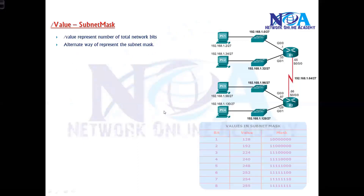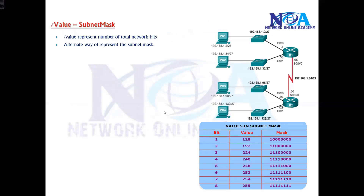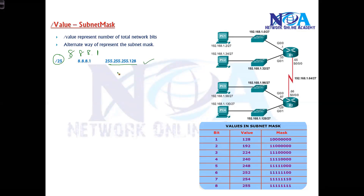Here are some examples using a reference table. You should remember values like 128, 192, 224, 240 for 4 bits, because 128+64+32+16 = 240. For slash 25: 8+8+8 = 24, plus 1 = 25, so the subnet mask is 255.255.255.128. For slash 28: 8+8+8 = 24, plus 4 = 28, so the subnet mask is 255.255.255.240.